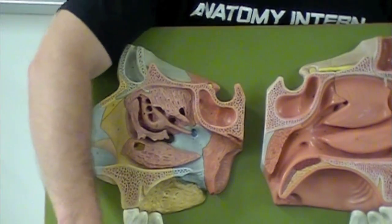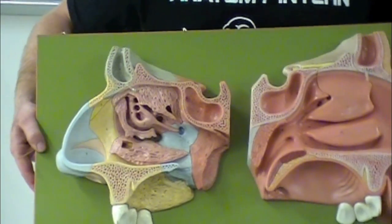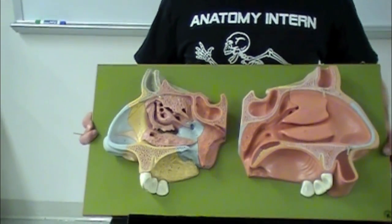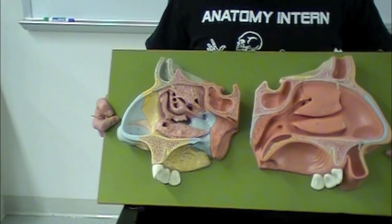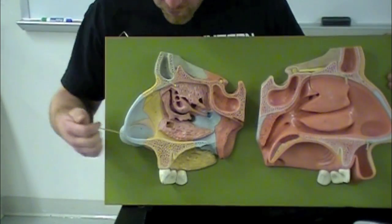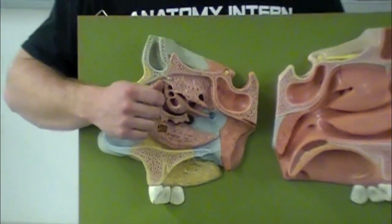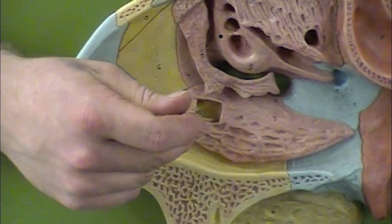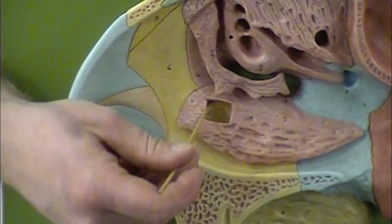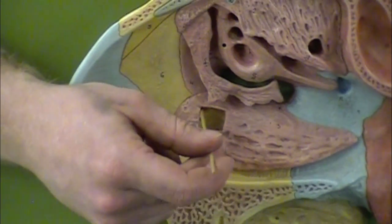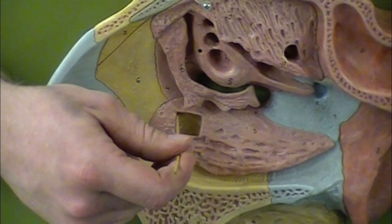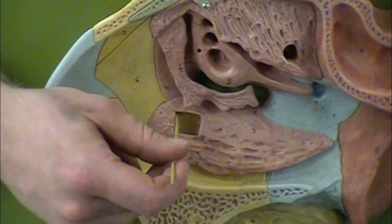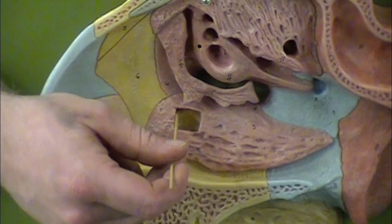Lastly for the nasal cavity, you have to know the nasolacrimal duct and canal. You're not able to see that very well on this model, but if you look down in here that is going to be your nasolacrimal canal. Just remember: the duct has epithelium on it and the canal is just bone — that's the only difference.